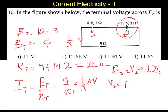V2 equal to E2 minus I into R2. What is E2? E2 is 12 minus I is 1 by 3. R2 is 2 ohms.